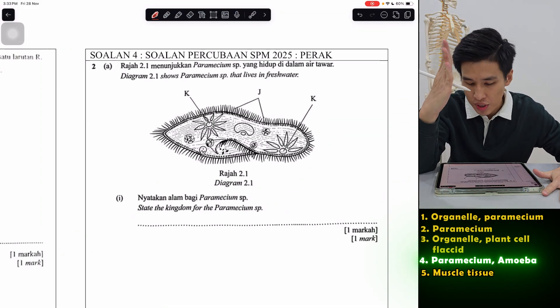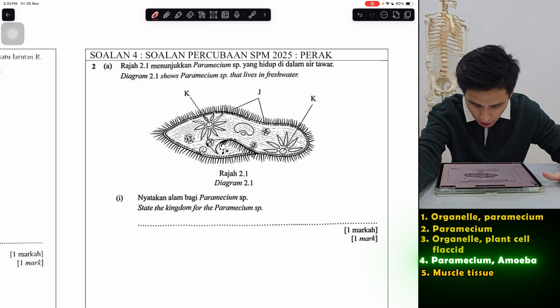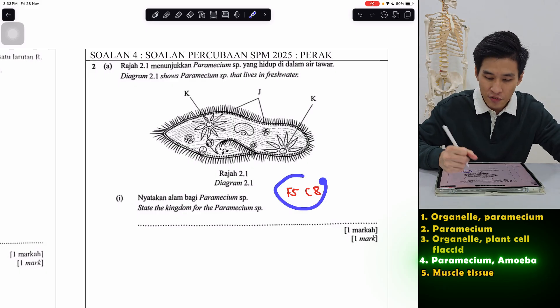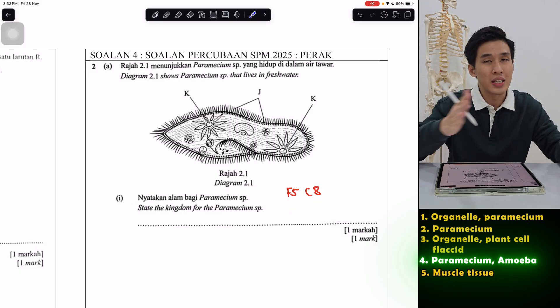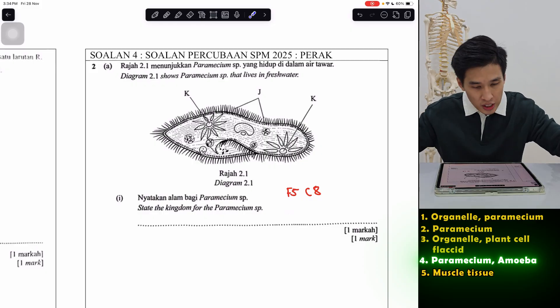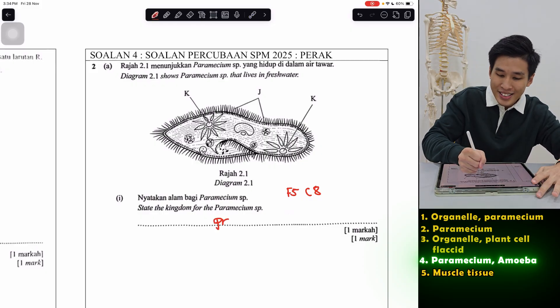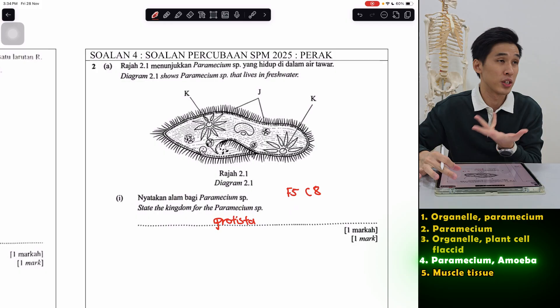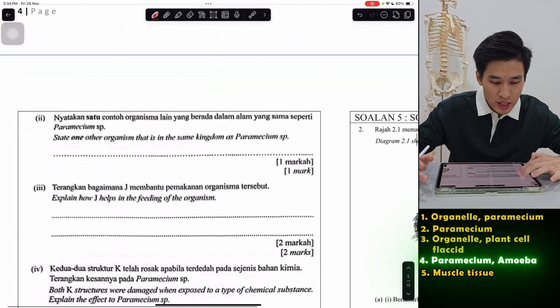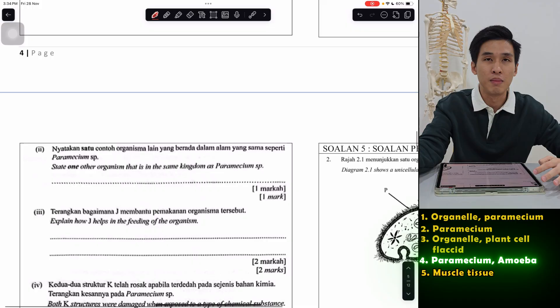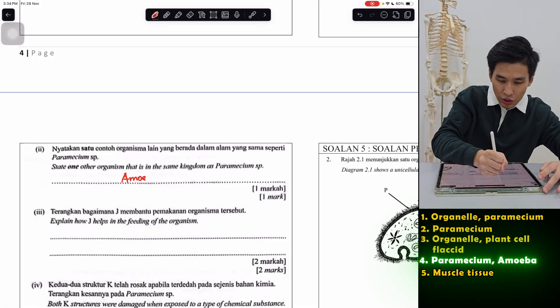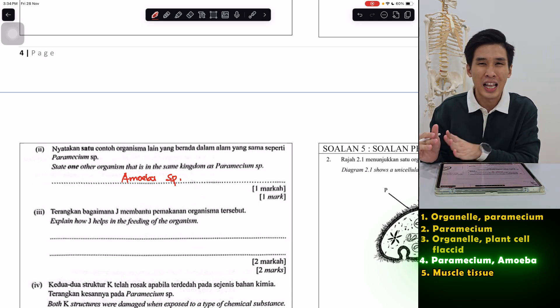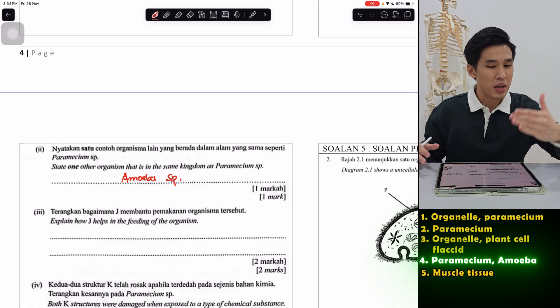Perak. Again, unicellular organisms. Again, paramecium. Now this is actually Form 5 Chapter 8. So for Form 4s watching this, you'll learn this in Form 5. State the kingdom of Paramecium. So Paramecium is under which kingdom? It's not bacterial. It's called Protista. Amoeba and Paramecium, they belong to this group of weird unicellular organisms called Protista. State one other organism that's in the same kingdom. The easiest one, Amoeba. Don't forget, sp dot. Other than Amoeba, you also can say those kind of what you learn in Form 5s, about Chlamydomonas, Algae, and many more.